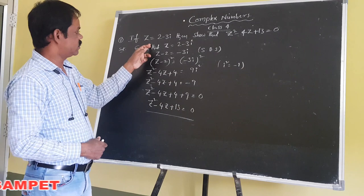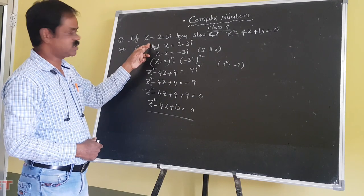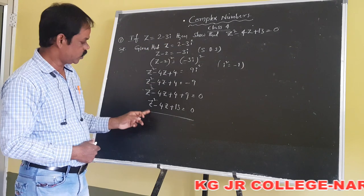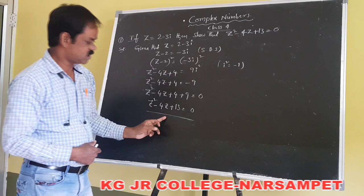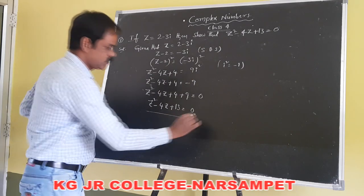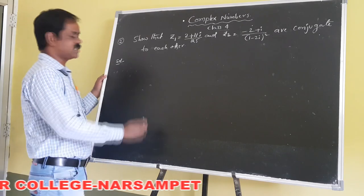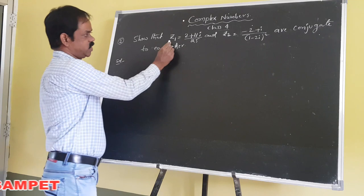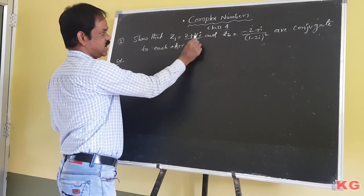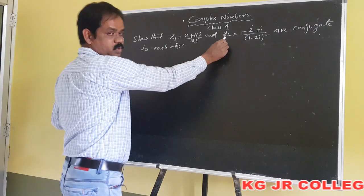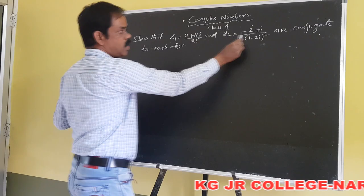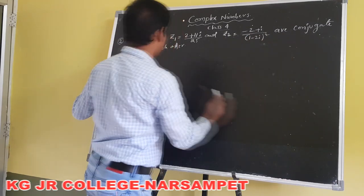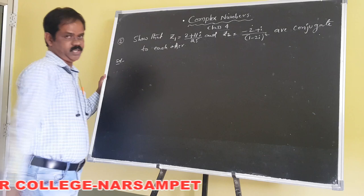So here the given problem is: if z equals 2 minus 3i, then we have proved that z squared minus 4z plus 13 equals 0. The second problem is: show that z1 equals (2 plus 11i) by 25 and z2 equals (minus 2 plus i) divided by (1 minus 2i) whole square are conjugate to each other.